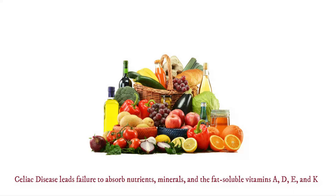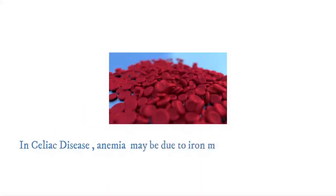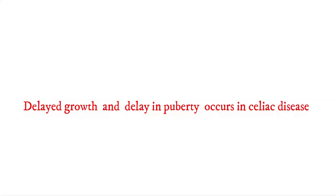There may be copper, zinc, calcium, and vitamin D deficiencies in Celiac disease. Malabsorption of carbohydrates and fats causes weight loss and, in children, retarded growth. Anemia may be due to iron malabsorption. Moreover, folic acid and vitamin B12 malabsorption leads to megaloblastic anemia. Delayed growth and delay in puberty also occur in Celiac disease.